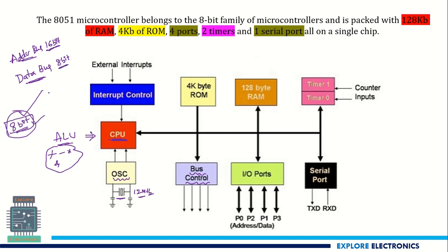There is 4 kilobytes of on-chip ROM to store the program and instructions inside the chip. This is read-only memory — it contains the program. There is also 128 bytes of RAM to store data. RAM stores data and ROM stores the program. Both are on-chip memories.